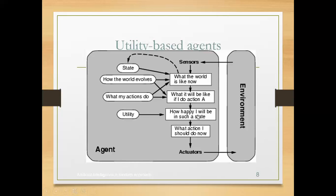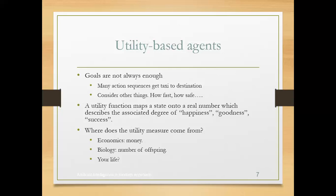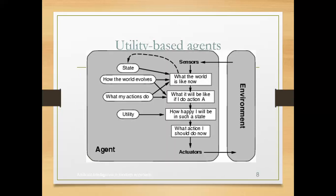If you observe, how happy will I be in such a state? The utility function is a real number that describes the associated degree of happiness, goodness, or success. For example, if I drive a car and customers appreciated it, or I got more number of drives based on my top score, some utility of happiness will come. This type of thinking about happiness after performing actions to the environment — that type of agent we call a utility-based agent.